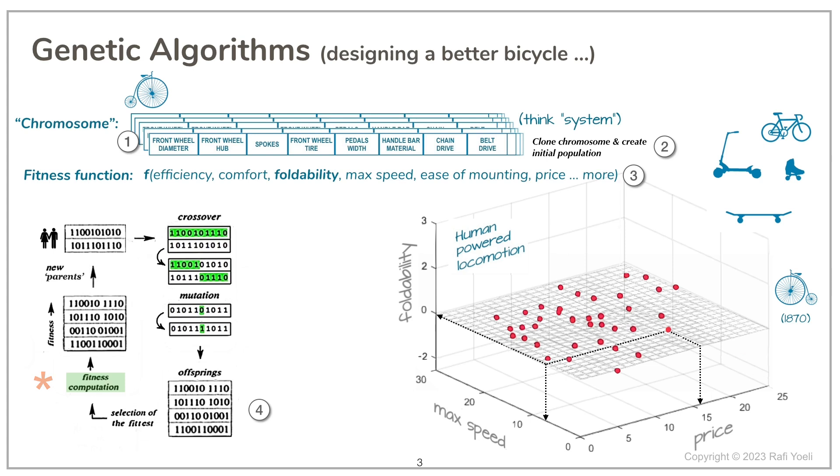In each cycle, the fittest individuals are chosen to establish the next generation. Then, just like mating in nature, their genes are mixed via crossover. And once in a while, some mutation of a randomly picked gene is also added, injecting some unpredictability into the process.